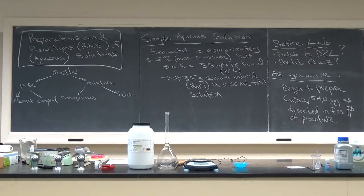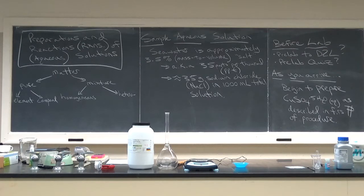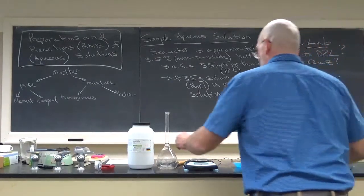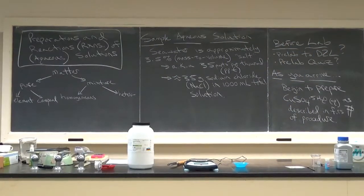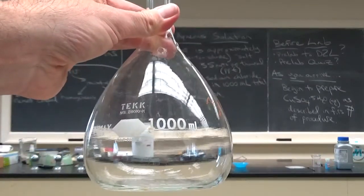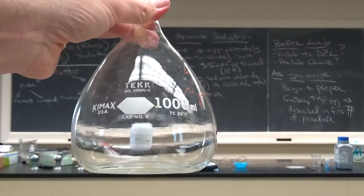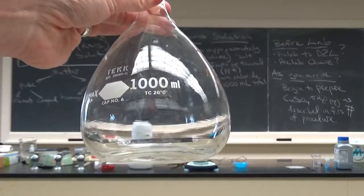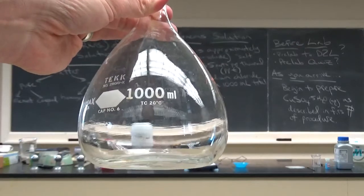Before I come out, I want to show you two key pieces of equipment—incredibly precise ways of measuring volume. This is a 1000-milliliter volumetric flask. You can see the TC marking on there, which means 'to contain at 20 degrees Celsius.'